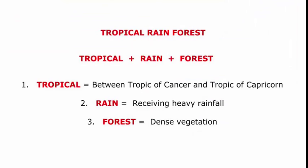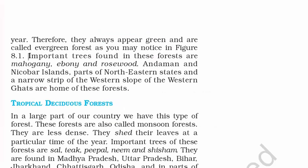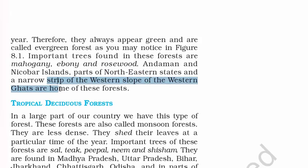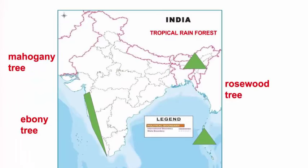The first type is tropical rainforest. Break down the word: 'tropical' means any place between the Tropic of Cancer and Tropic of Capricorn; 'rain' means heavy rainfall; and 'forest' means dense vegetation. Important trees found in these forests are mahogany, ebony and rosewood. The Andaman and Nicobar Islands, parts of the northeastern states and a narrow strip of the western slopes of the Western Ghats are home to these forests.